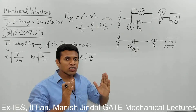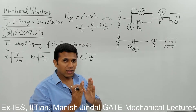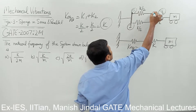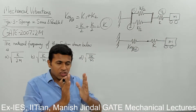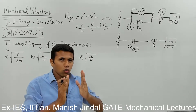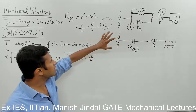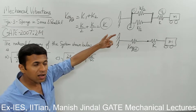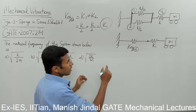When they are compressed, both springs will have equal compression. This is what the diagram signifies — when the springs extend, both have the same expansion, and when they compress, both have the same compression. That confirms they are parallel.